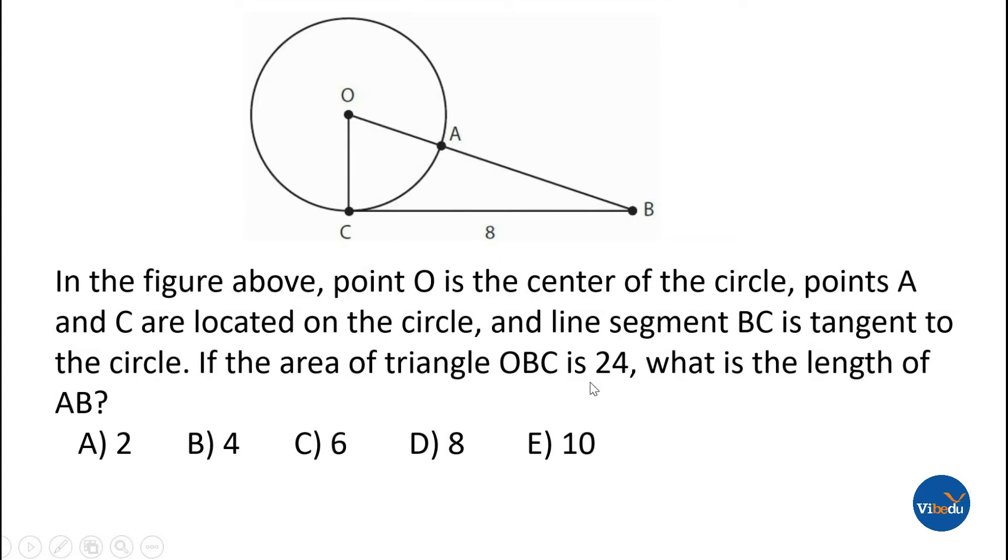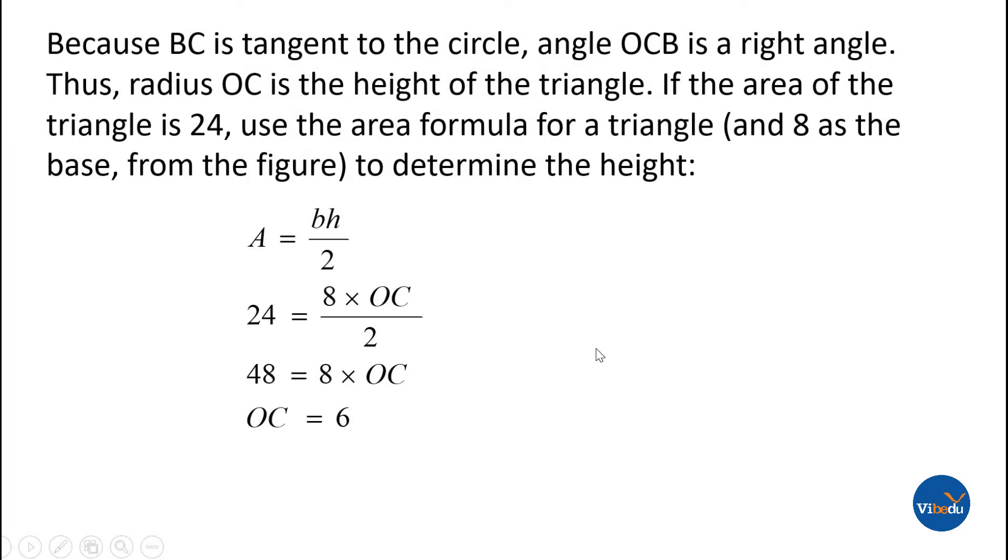If the area of triangle OBC is 24, what is the length of AB? In the explanation, because BC is tangent to the circle, angle OCB is a right angle. Thus, radius OC is the height of the triangle.